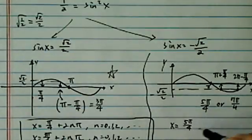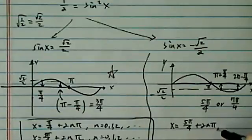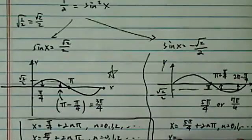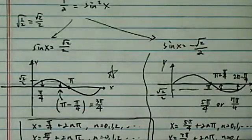So let's write it. x equal to 5π/4 for this side, plus 2nπ, where n equal to 0, 1, 2, so on and so forth, or x equal to 7π/4 plus 2nπ with the same repetition.